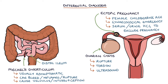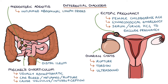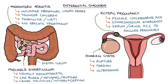The final differential we'll talk about is mesenteric adenitis, which describes inflamed abdominal lymph nodes. It presents with abdominal pain, usually in younger children, and is often associated with tonsillitis or an upper respiratory tract infection. No specific treatment is required for mesenteric adenitis.